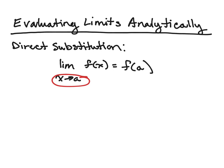The method that we use to do this is called direct substitution. With direct substitution, we're going to take this value and just substitute it into our function and figure out if the function is defined at that point.